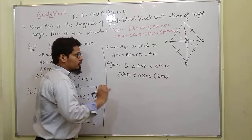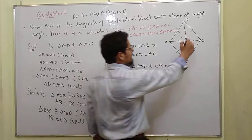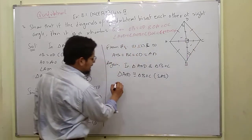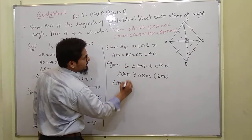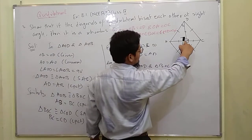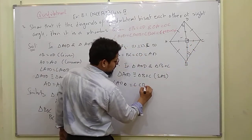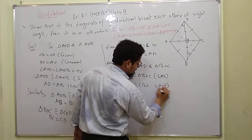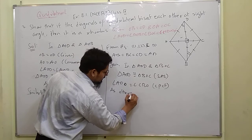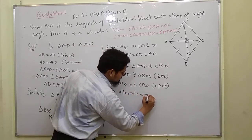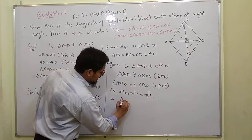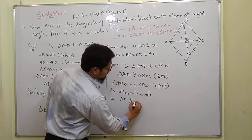And now, angle ADO is equal to angle CBO — these are alternate angles. In line AD is parallel to BC, so the alternate angles are equal.